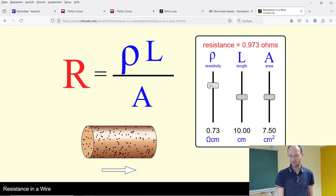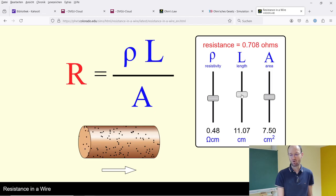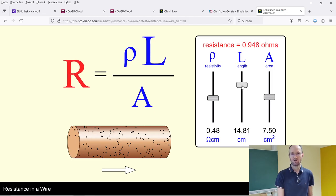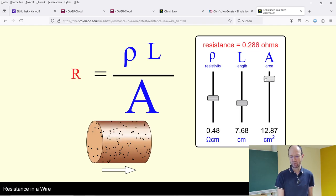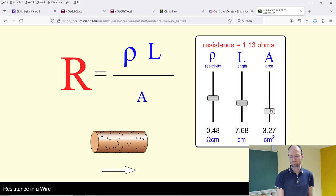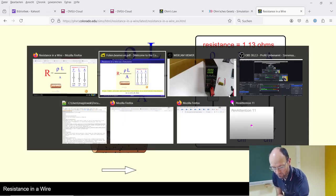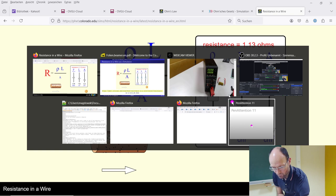And there's also a nice simulation for this. If you change, if you enlarge the resistivity, of course resistance will go up. If you have a longer wire or longer resistor, resistance will go up. And if you have more cross section area, then resistance will go down.